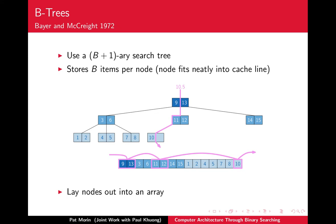Searching for 10.5 in the example: 10.5 is not in the array. We want the smallest value greater than or equal to the search key. The answer is 11 — the last key where we took a non-rightmost turn during the search. At each node we decide left, middle, or right; the answer is always the last key we turned left at. In this example we turned left at 11, so that's the answer.